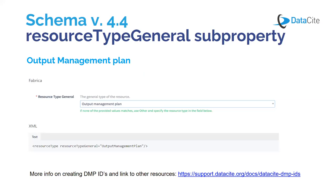A special note about output management plan. DataCite supports data management plan identifiers since schema version 4.4. A DMP ID is a unique persistent identifier for a data management plan — it is a DOI with resource type 'output management plan'. Since the release of this schema version, this resource type general is now included in the schema, and with the term 'output management plan' we cover both data management plan and software management plan.